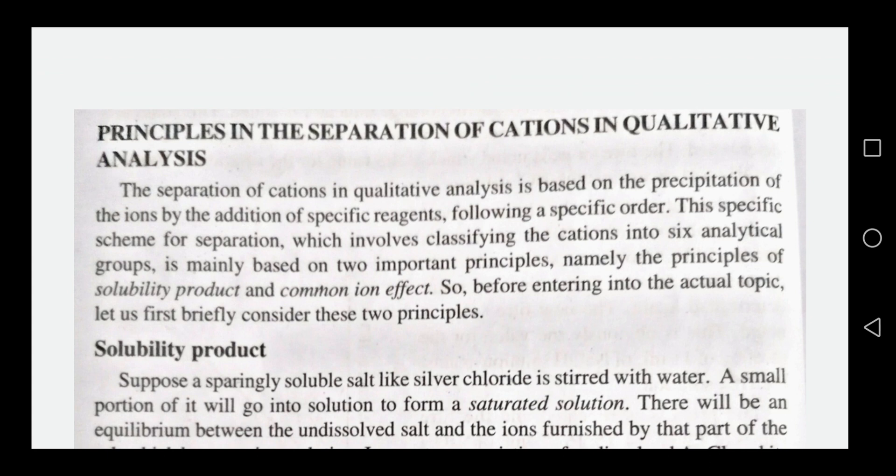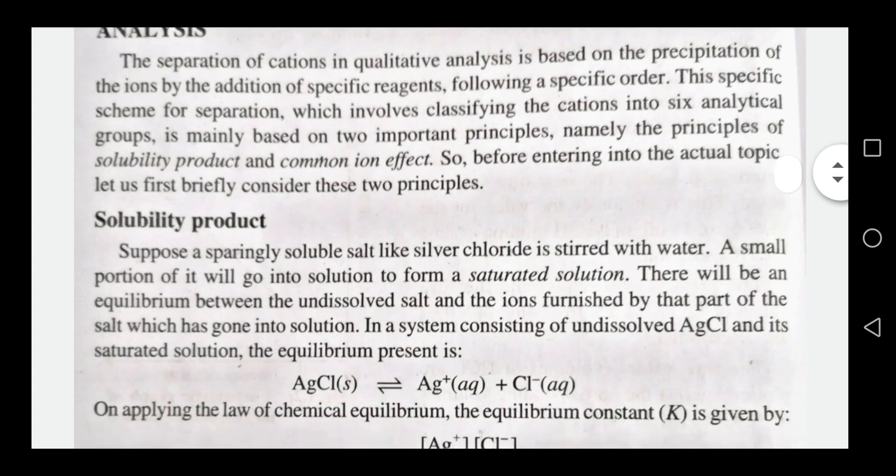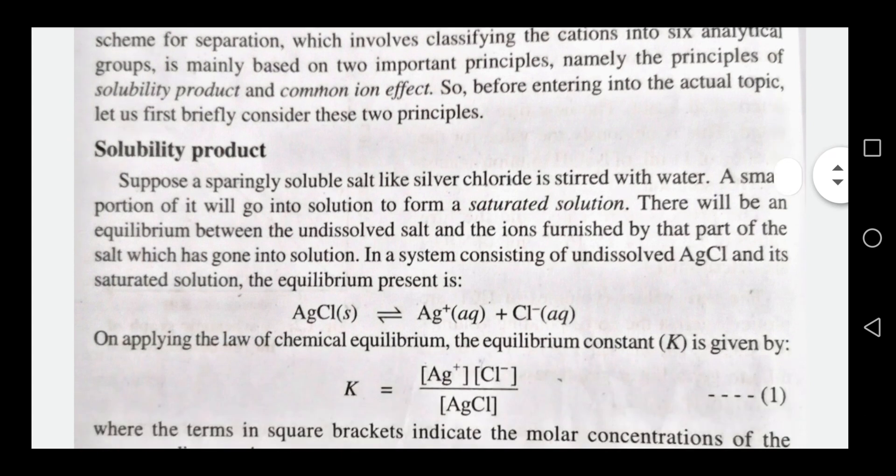The two principles are solubility product and common ion effect. Solubility product applies to sparingly soluble salts. For example, silver chloride (AgCl) — when placed in water, a small portion of it will go into solution to form a saturated solution. There is an equilibrium between the undissolved salt and the ions furnished by that part of the salt which has gone into solution.